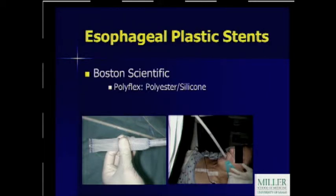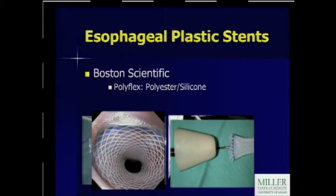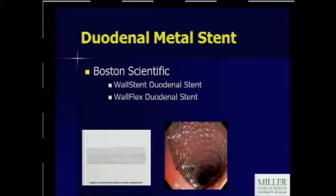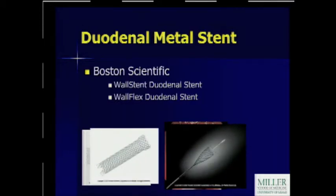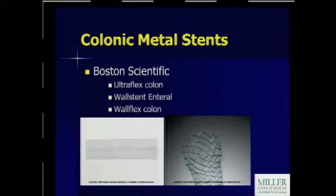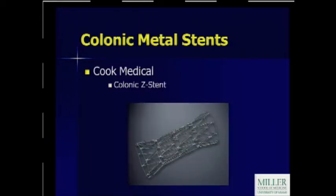Boston Scientific also has a fully plastic stent — a polyester stent called the Polyflex. This is the one that originally initiated the concept of being able to remove these stents. Some of the techniques to remove them include using a hood protector and rat-tooth forceps to grasp and remove the stent. There are also duodenal stents from Boston Scientific; the original wall stents had sharper edges that could damage mucosa, while newer stents have more rounded edges causing fewer mucosal ulcerations. Colonic stents similarly evolved from sharp-edged wall stents to rounded-edge Wallflexes. Cook also has a colonic stent.